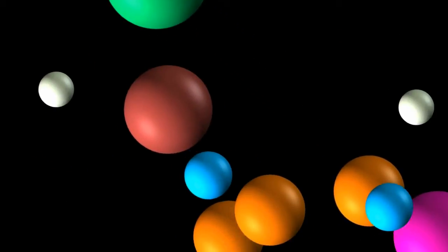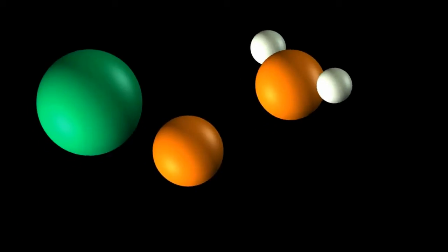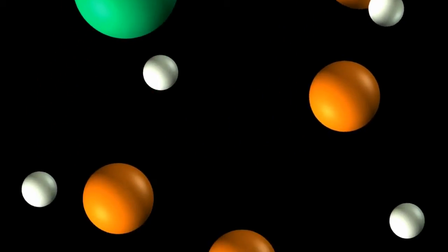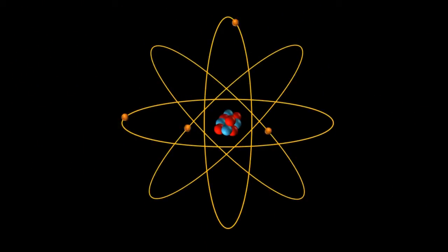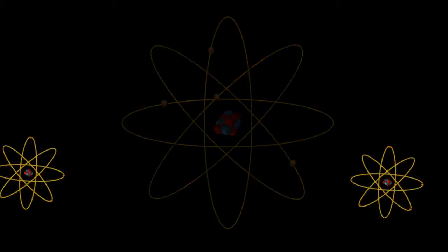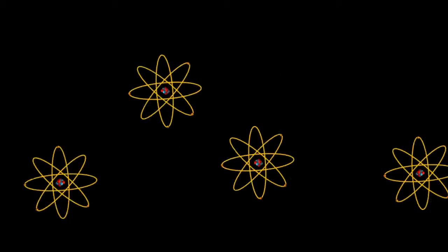In previous episodes, we were illustrating atoms as solid spheres, but it turns out that they're not really solid at all. They're mostly empty space. However, the electrons are spinning around the nucleus so fast that the atom effectively becomes, more or less, like a sphere.